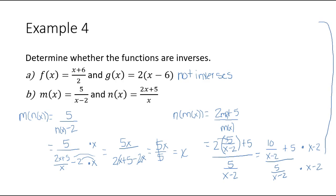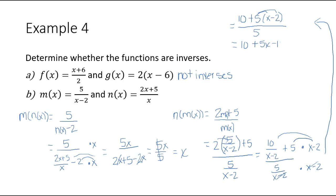The x minus 2 cancels with this denominator and leaves me with just 10. I also have to multiply x minus 2 by that 5, giving 5 times x minus 2. In the denominator, the x minus 2 cancels and leaves just 5. When we distribute the 5 into the parentheses, we have 10 plus 5x minus 10 over 5. The tens cancel in the numerator, leaving 5x divided by 5. This fraction reduces and we're left with x.